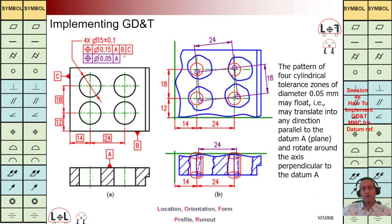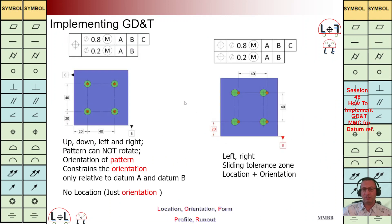But what if we have datum B added at the bottom — a positioning control of Tz 0.05 with respect to A and B? It means the distance with respect to B is important. This small cylinder can move left and right, but it cannot move up and down and it cannot rotate. These small cylinders can move just left and right, the same as the topic discussed in the previous session — it can only move left and right.